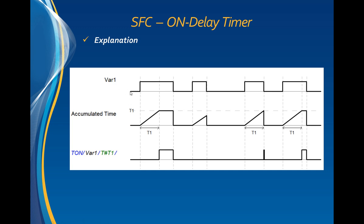When the input variable goes from false to true, the timer begins counting from zero until reaching the preset time t1, as long as the input variable remains true. After t1 time, the output of the timer will go to true and remains as long as the input is true. Then when the input goes to false, the output of the timer will go to false.